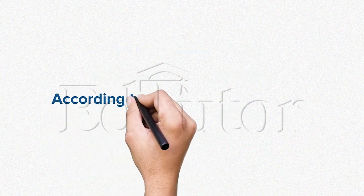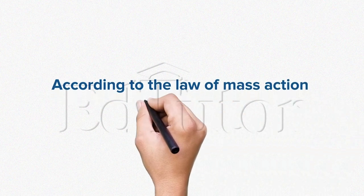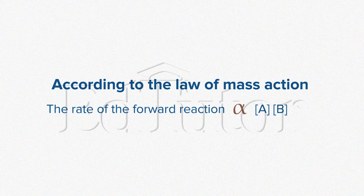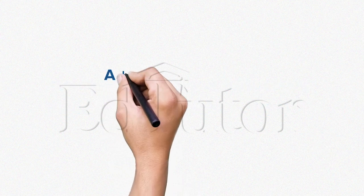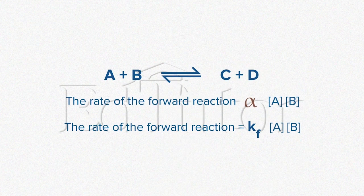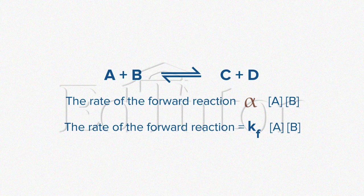The molar concentration of each reactant and product can be represented in square brackets. In accordance with the law of mass action, the rate of the forward reaction is directly proportional to the product of the concentration of the reactants. In the case of the forward reaction, where A and B react to form C and D, the rate of reaction can be written like this.